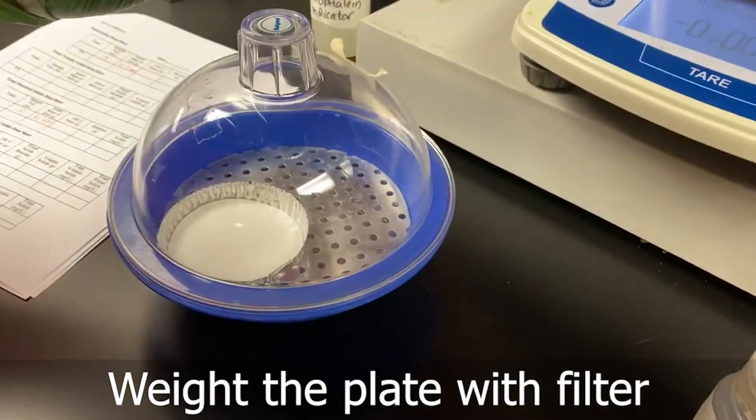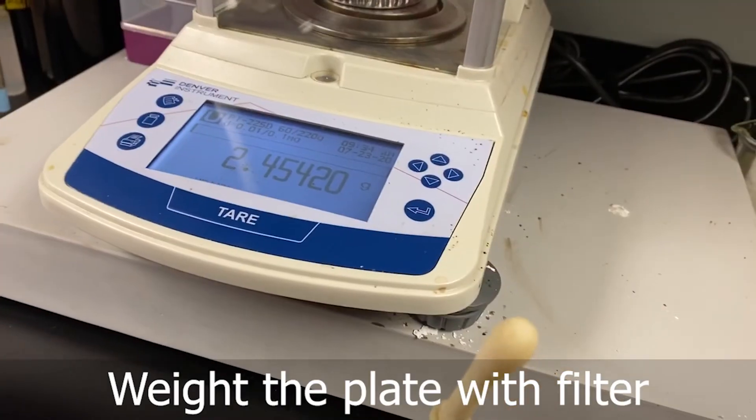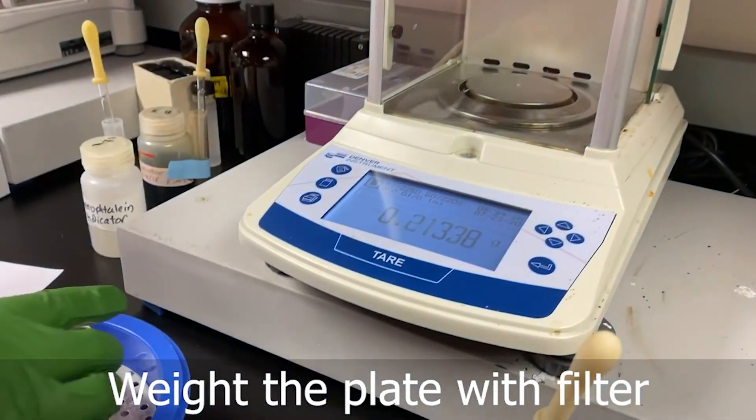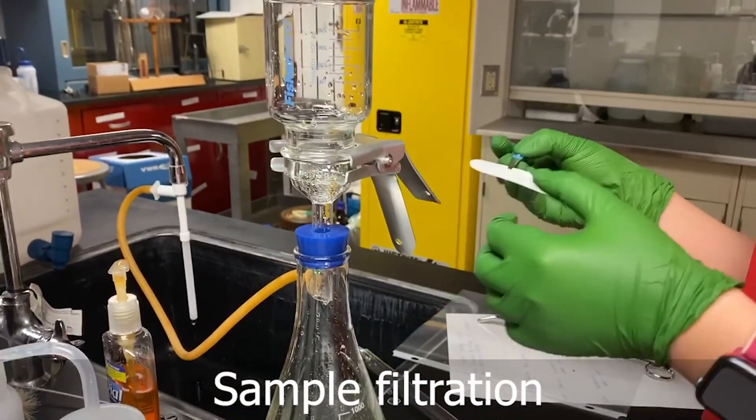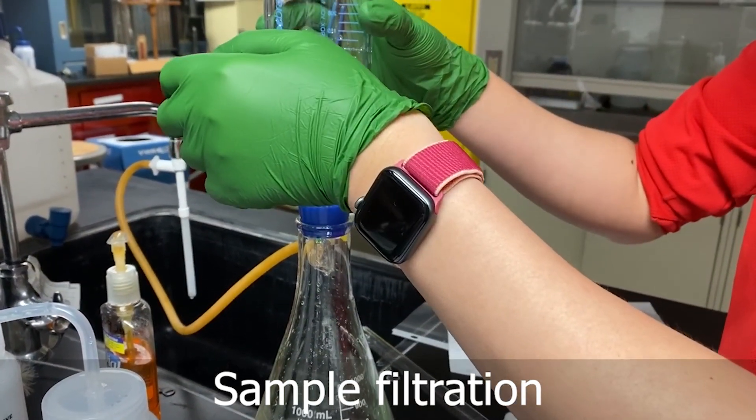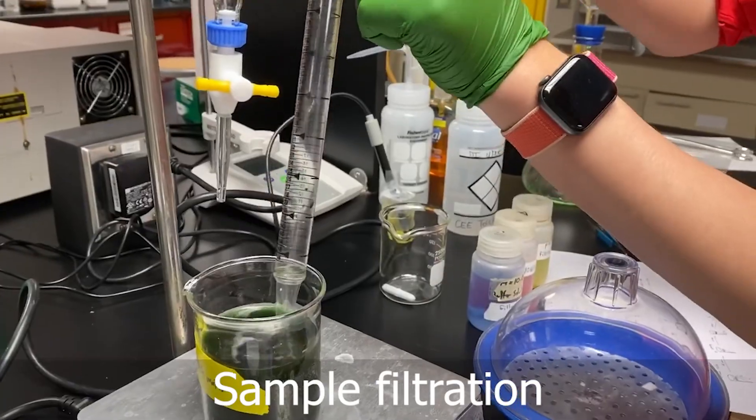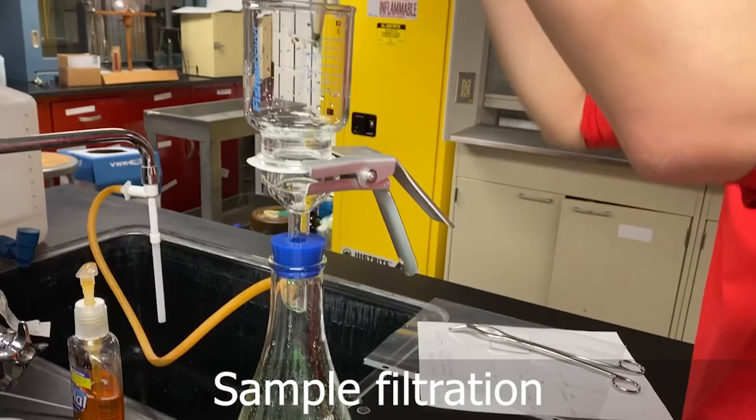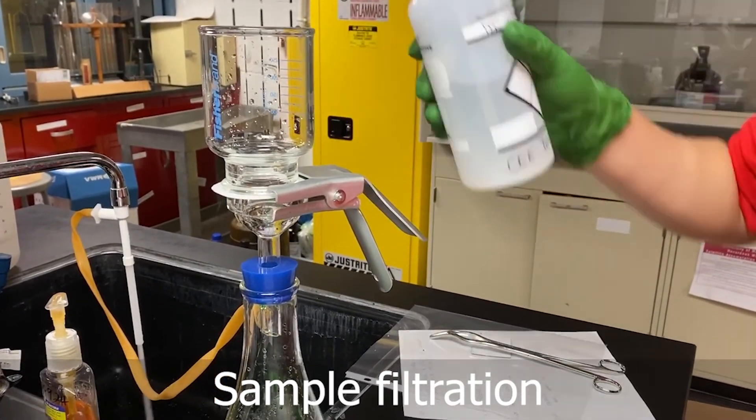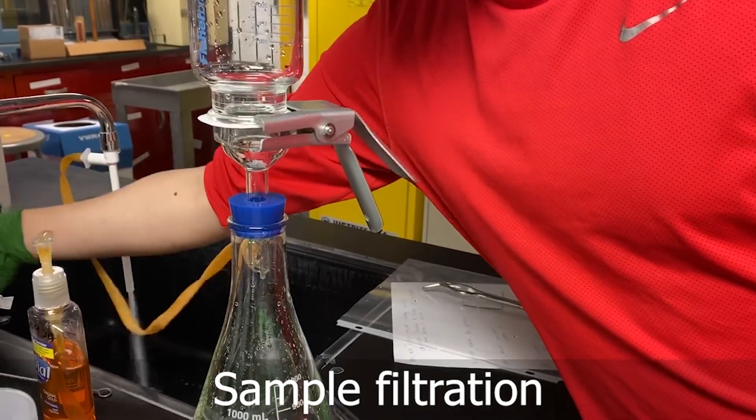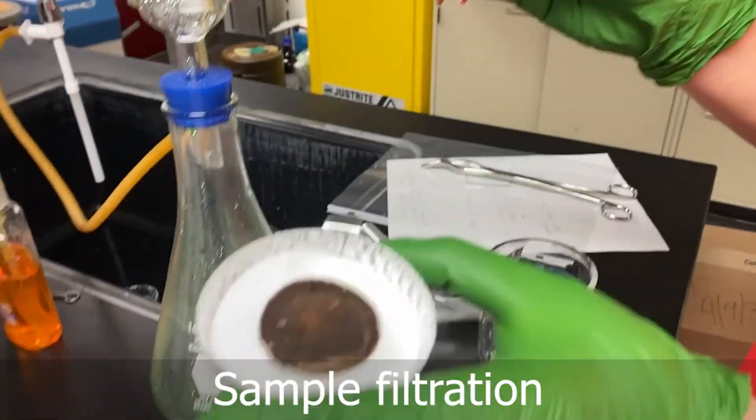So measure the first mass of the first one and then the second one. How do you know what is the first one and what is the second one? Do you have to mark this? Yeah, I can make a scratch on the second one. Then we pour the sample into the filter and after filtering, take the filter and put it into here and then bake it.